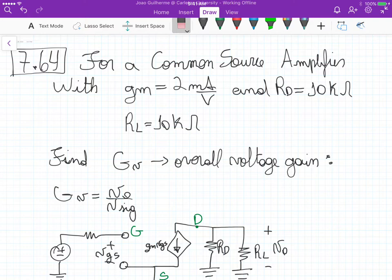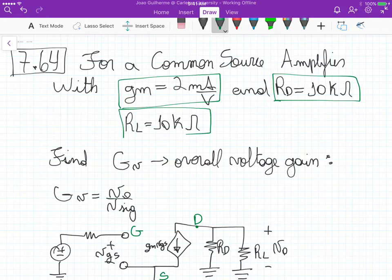This is problem 7.64, and in this problem we have a common source amplifier with a transconductance of 2 milliamps per volt, and a drain resistance of 10k, and a load resistance of 10k ohms. So we need to determine